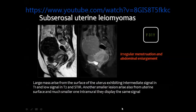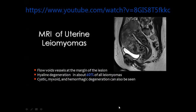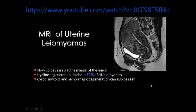On the sagittal T1 fat-suppressed image, uterine fibroids may show signal-void vessels at the margin because they are vascular lesions. They may undergo hyaline degeneration, cystic degeneration, hemorrhagic degeneration, or myxoid degeneration — many degenerative changes may affect uterine fibroids and will be reflected in the signal of the fibroid mass. The usual signal is dark on T1 and T2; with cystic changes it appears black on T1 and bright on T2; with hemorrhage it may appear bright on both T1 and T2.